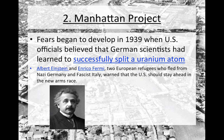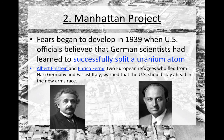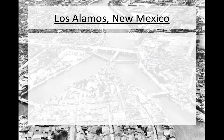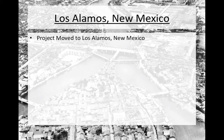It was Albert Einstein and Enrico Fermi, two European refugees who fled from Europe, who warned that the United States should begin its own atomic weapons program in order to stay ahead of a nascent arms race that began to develop. The development did begin, starting at famous universities like Columbia and the University of Chicago, but it was later moved to Los Alamos, New Mexico in order to be kept secret.